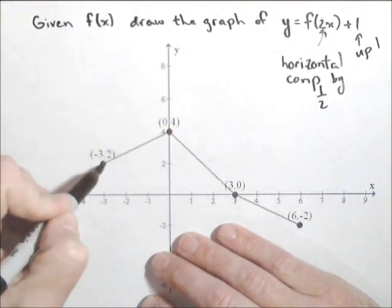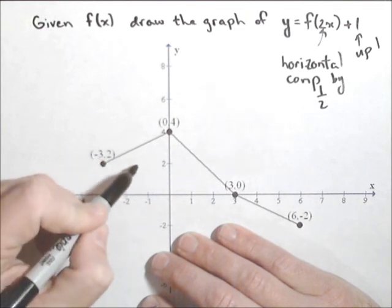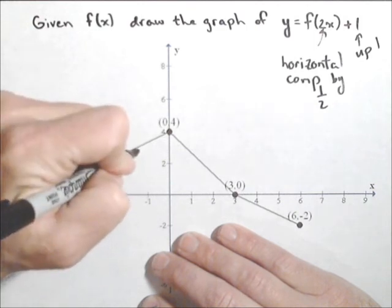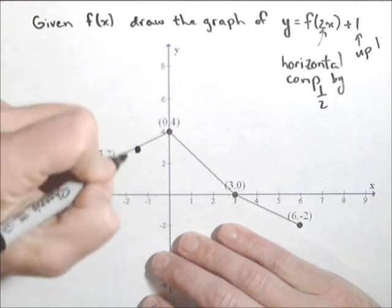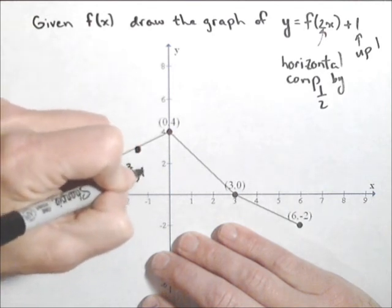So let's take our point (-3, 2). First thing that's happening is the x value is getting cut in half. So that's going to be -3/2, or -1.5, so about right there, so about halfway towards the x-axis, and then up 1. So it's going to come in about right here, and that's going to be the point (-3/2, 1).